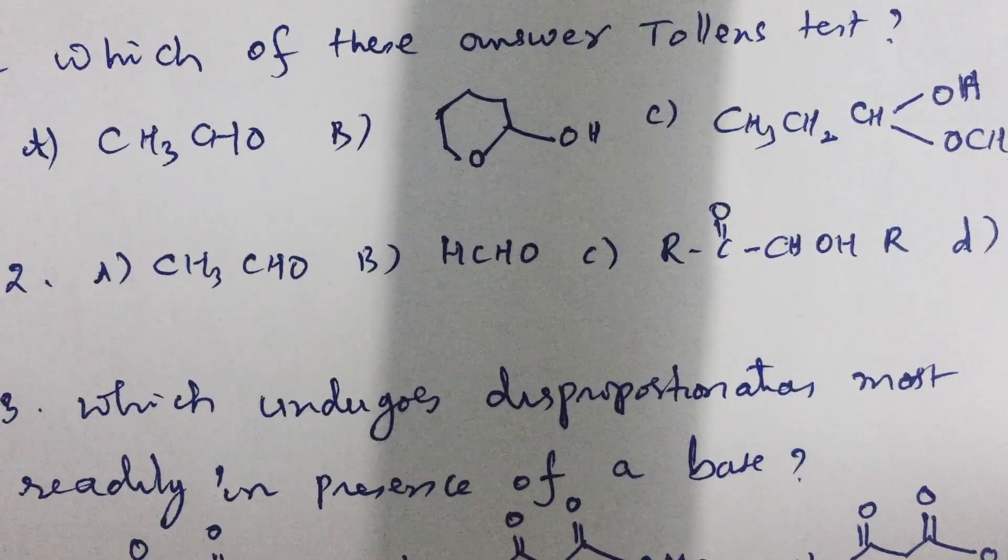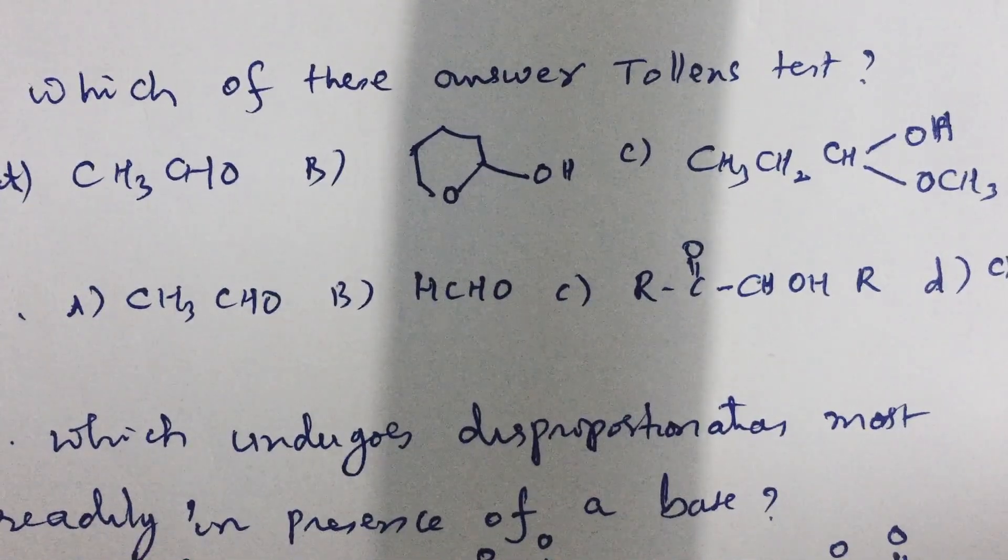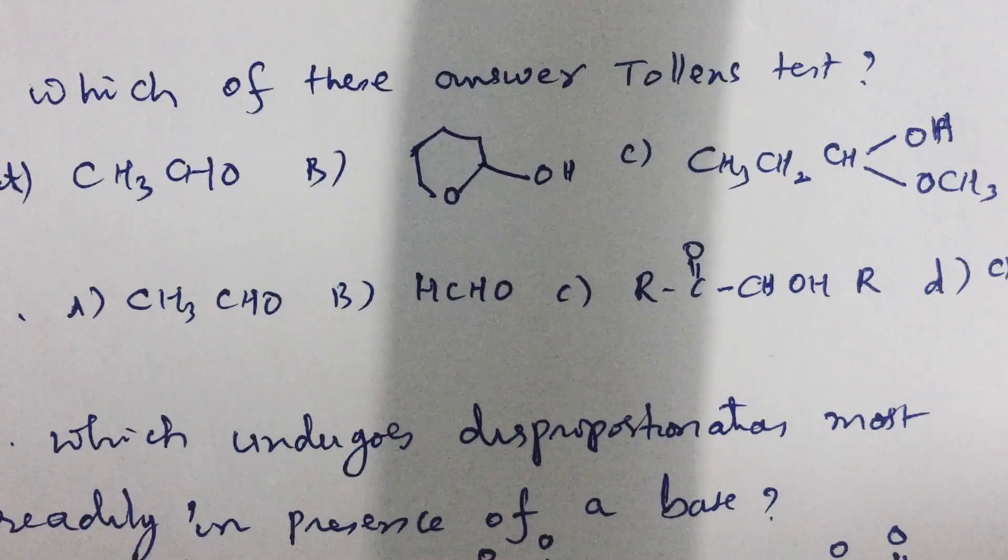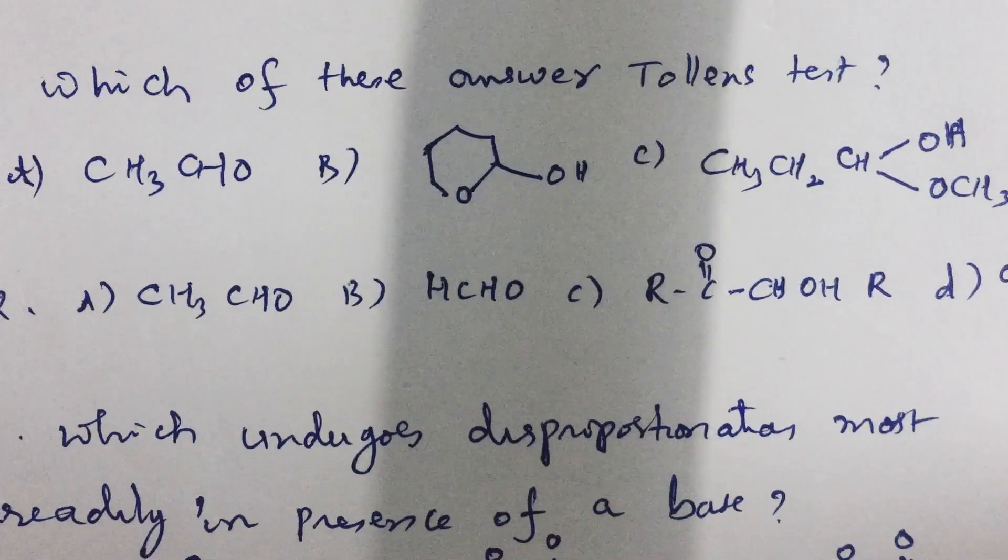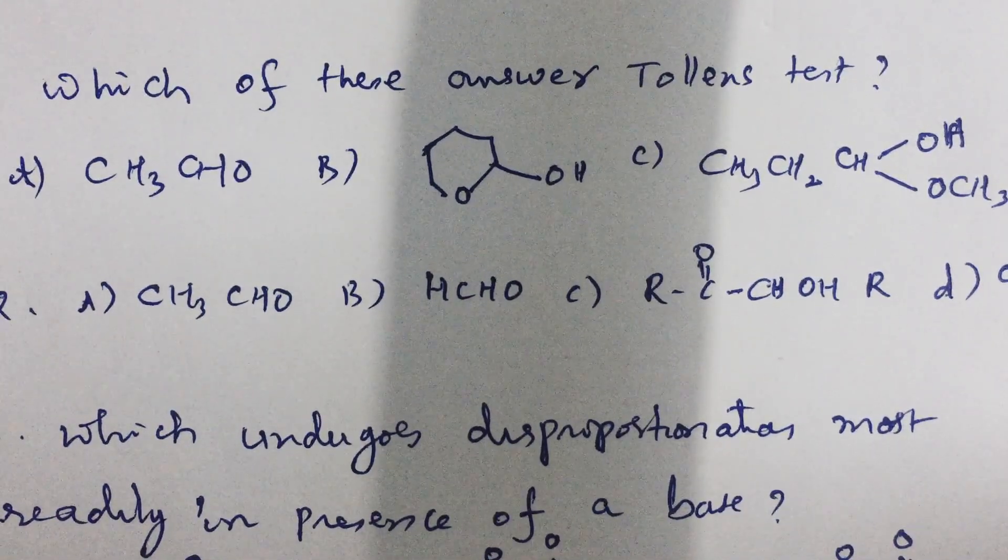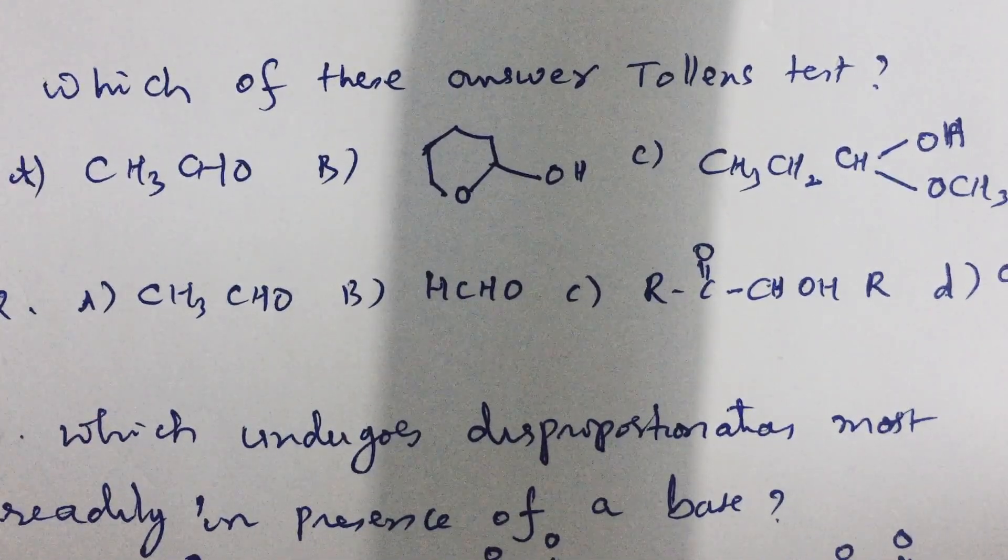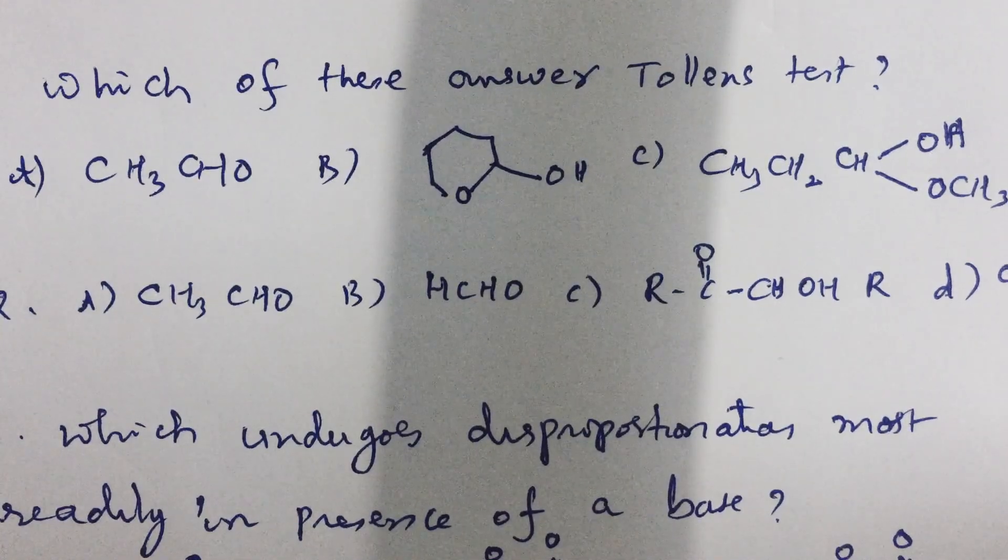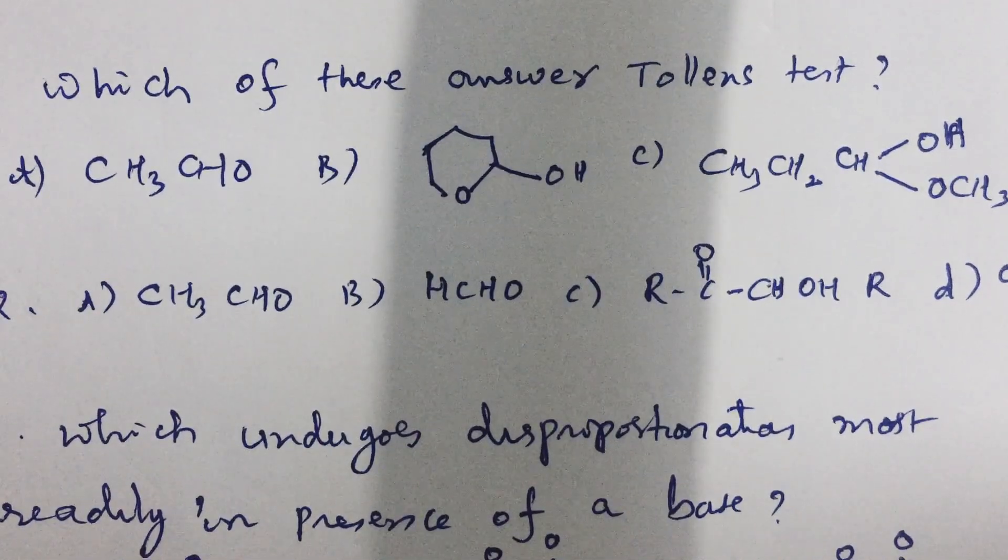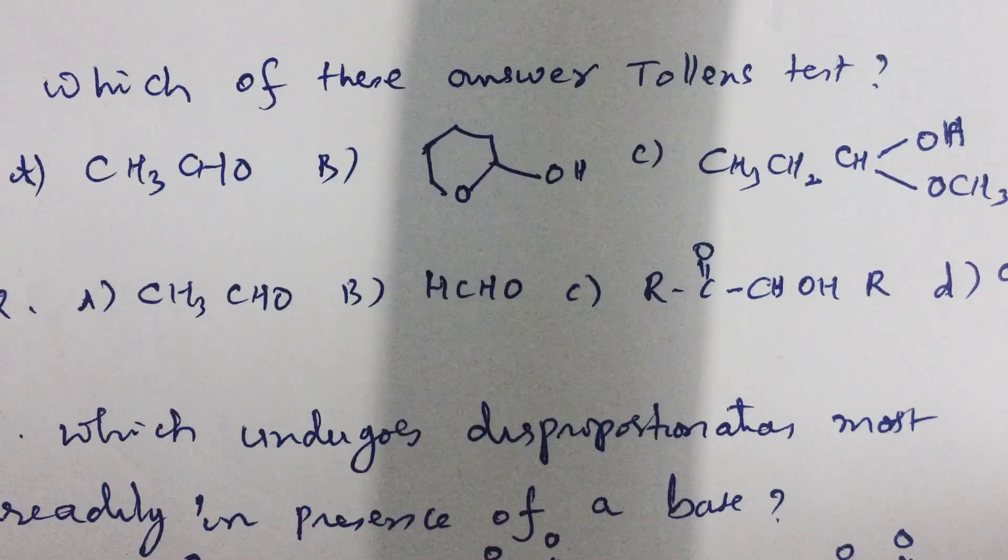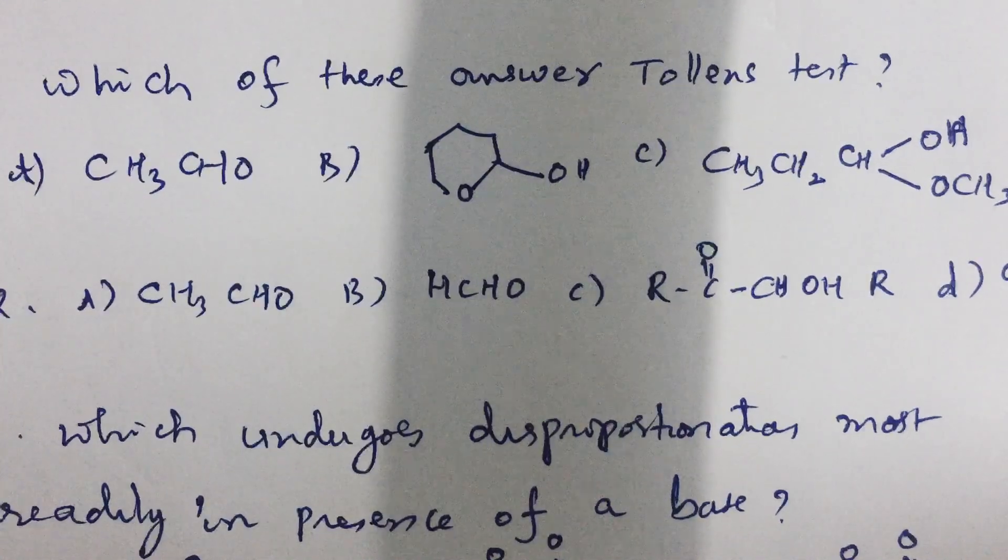Which undergoes disproportionation most readily in presence of a base. Disproportionation means a Cannizzaro reaction shown by aldehydes which do not have alpha hydrogens. In this disproportionation, or Cannizzaro reaction, hydride ion shift is the slowest step or rate determining step. One molecule undergoes oxidation due to the attack of OH- on carbonyl carbon facilitating hydride shift to another carbonyl group of another molecule. So, first molecule undergoes oxidation and the second molecule undergoes reduction.